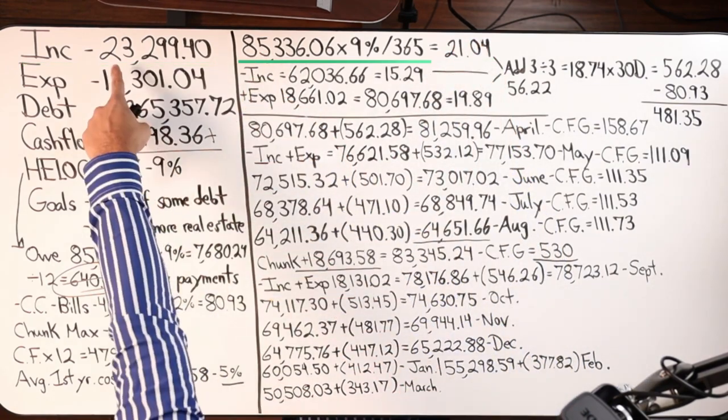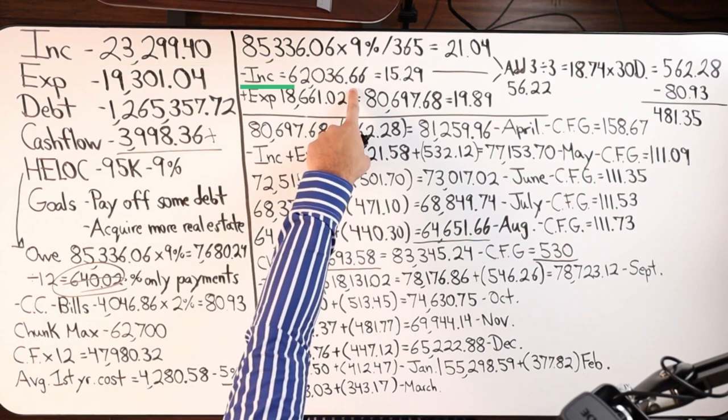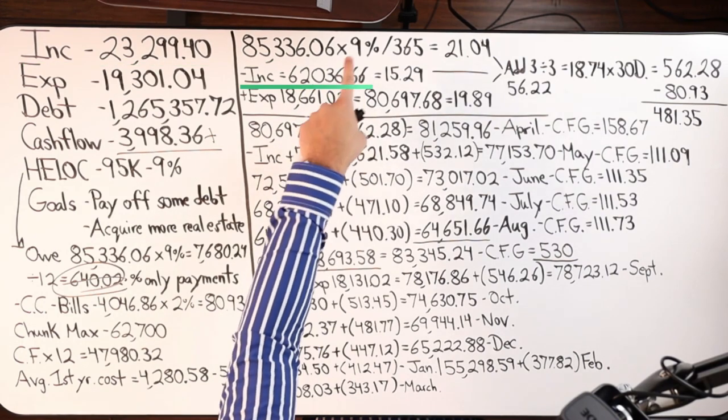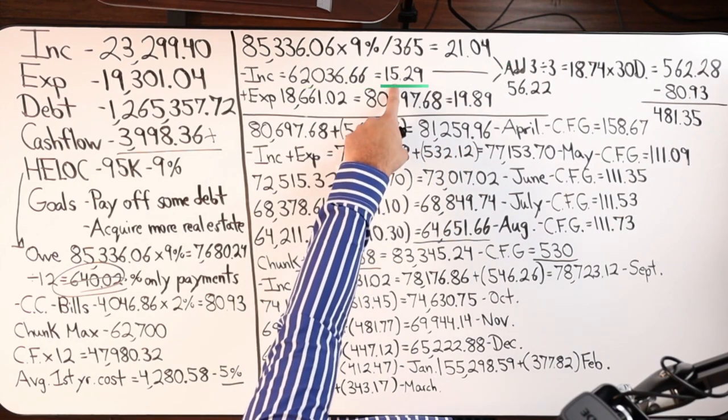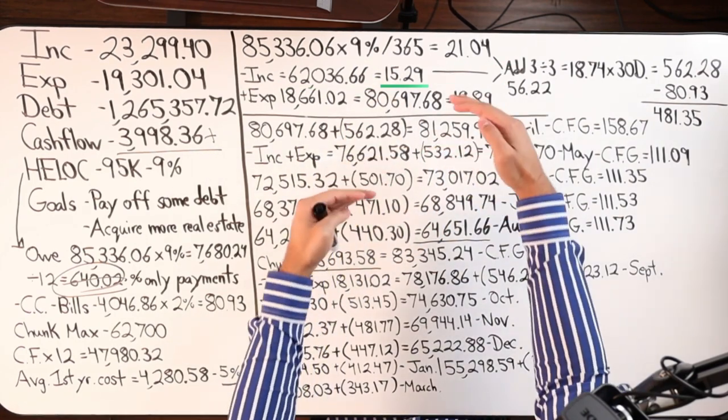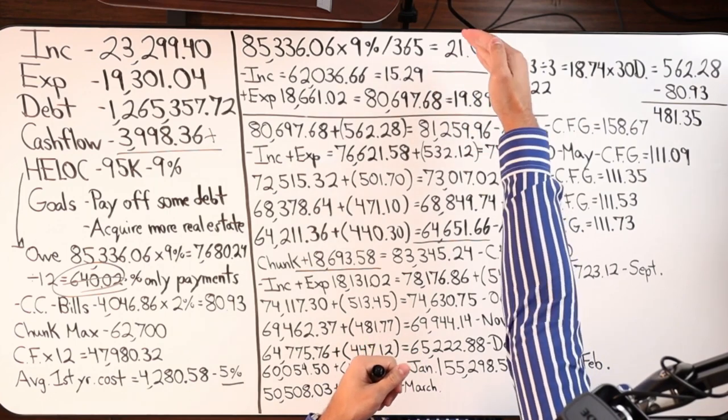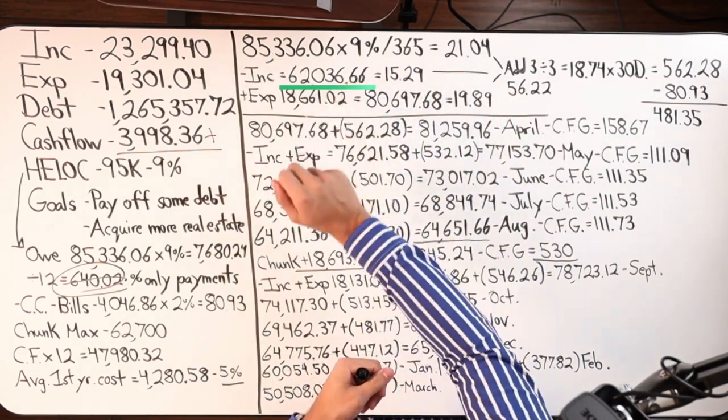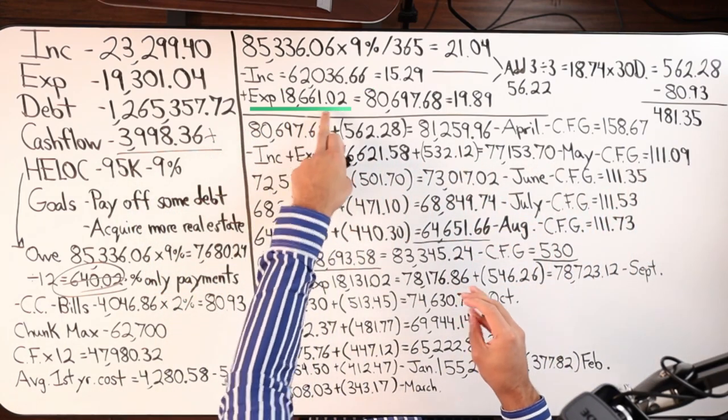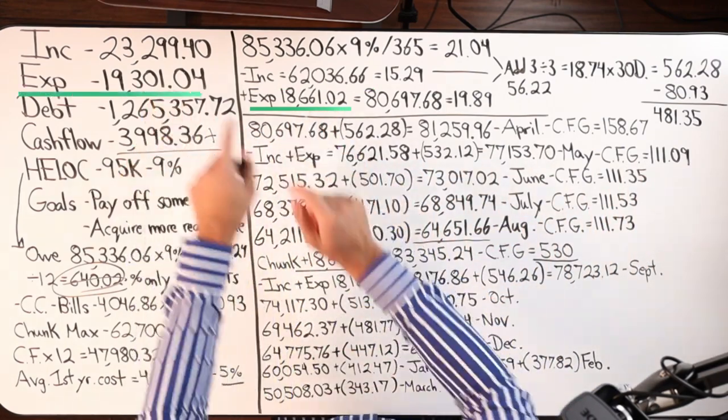So here's what you do. Take the 85 minus income, you should get this number, $62,336.66, times that by 9%, divide by 365. Now you're at $15.29. So here's what I'm doing. I'm getting an average. I'm saying for roughly 10 days, we owe this number, for roughly 10 days, we owe this number, and then expenses are coming out little by little. Notice how there's a difference.